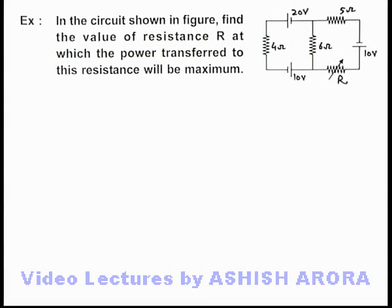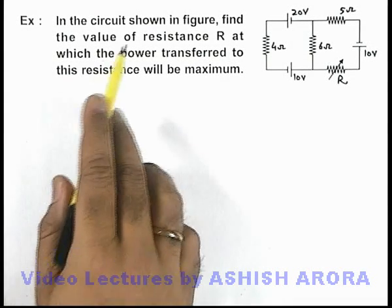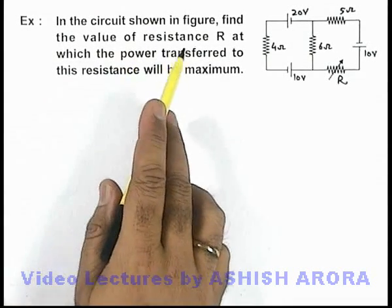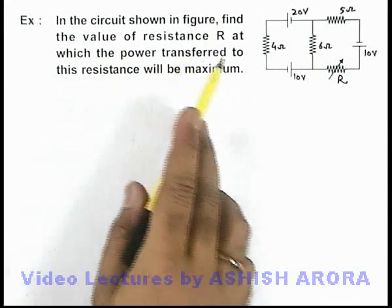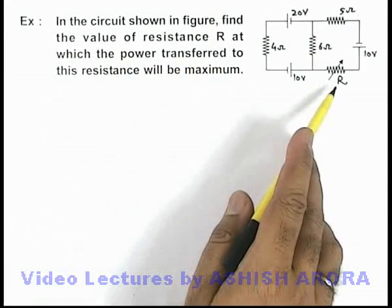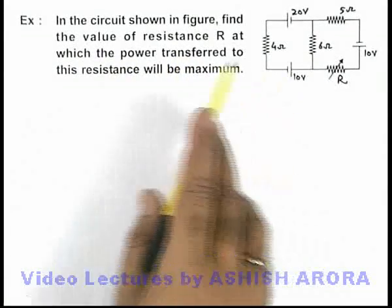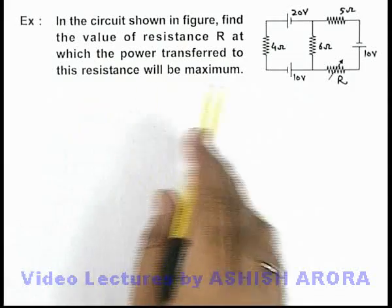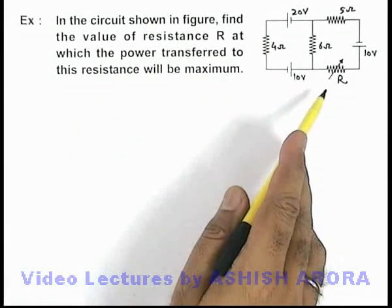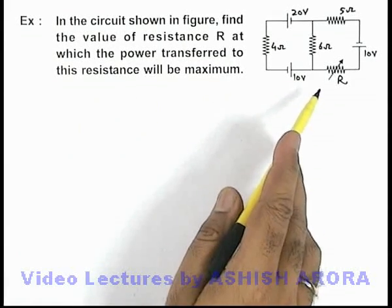This example says that in the circuit shown in the figure, we are required to find the value of resistance R at which the power transfer to this resistance will be maximum.